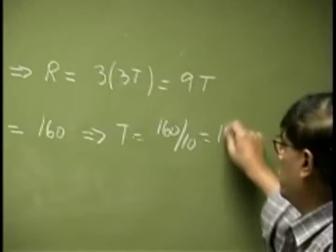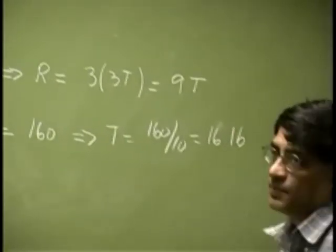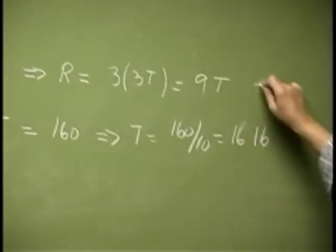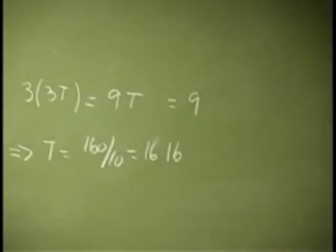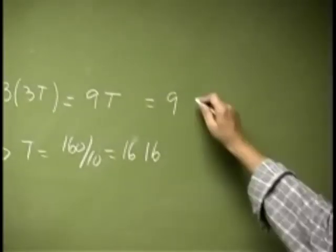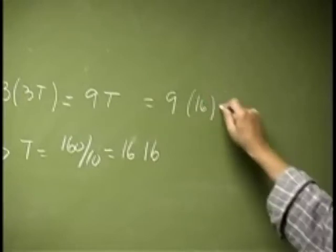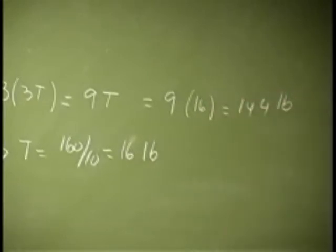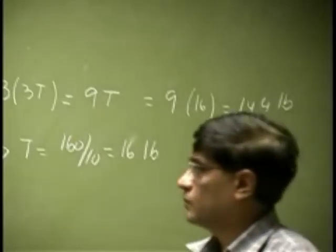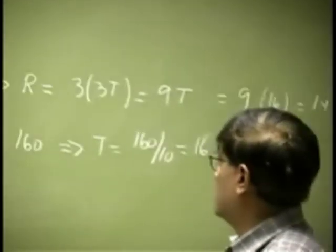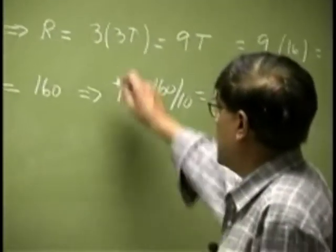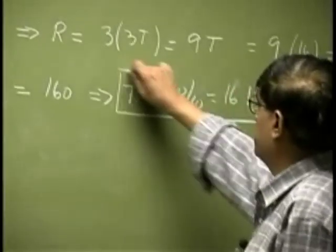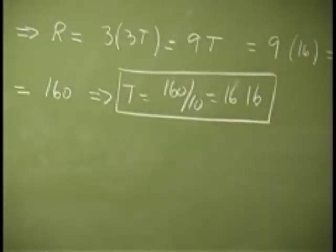So from this set we should get T as 160 by 10, or 16 pounds. That means the actual reaction which is R is going to be 9 times 16, or 144 pounds. So that is one answer; that's the force at point A.